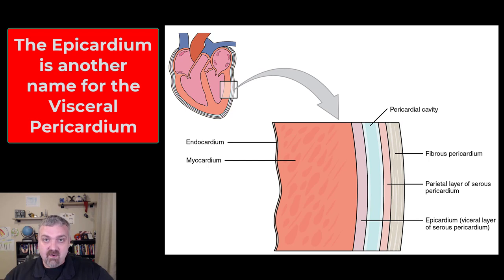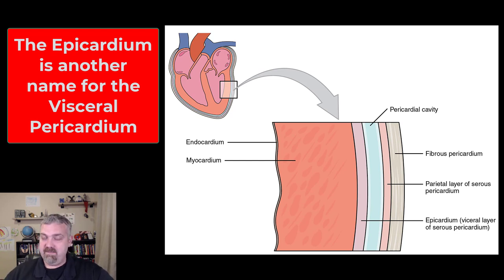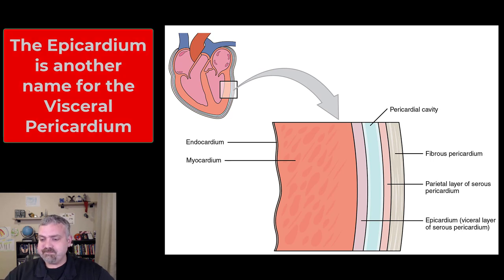Then we have the myocardium — that's the heart muscle, obviously what we're really here to talk about since the heart is a muscular pump. Then the inside of the heart would be lined with the endocardium, basically the same as the endothelium that lines your blood vessels.